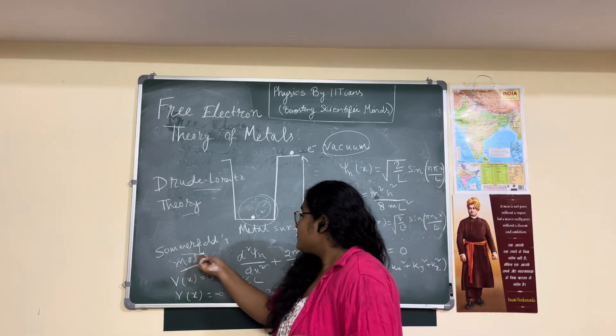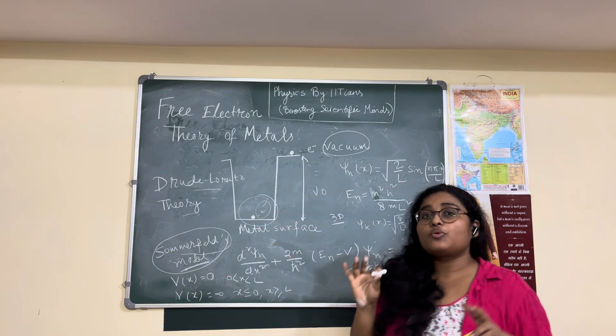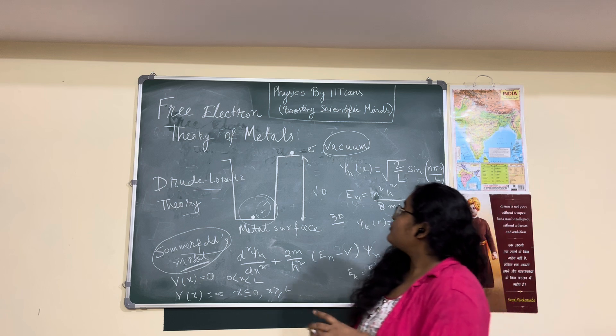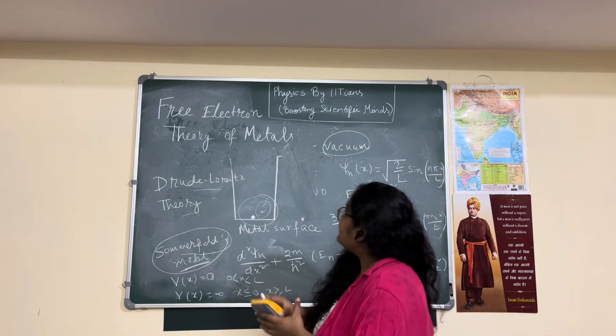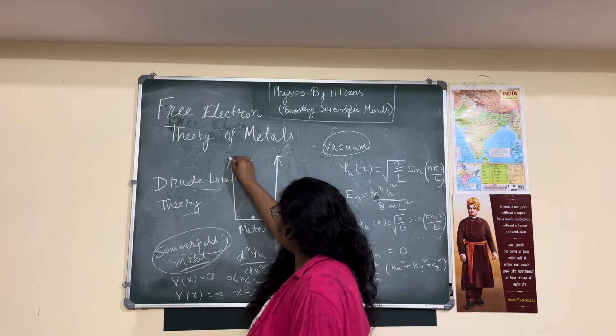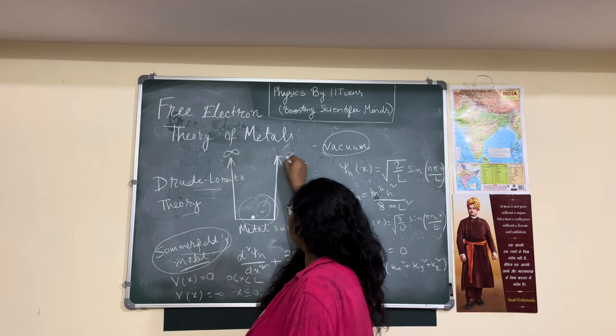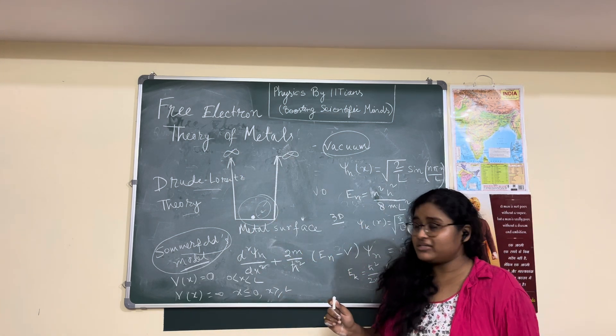It cannot even classify different materials and could not give exact properties of the materials. And then Sommerfeld came into the picture. So Sommerfeld gave the model with this kind of assumption with a quantum mechanical model. Sommerfeld proposed that instead of this finite barrier of metal V naught, let's take the metallic box as an infinite potential box.